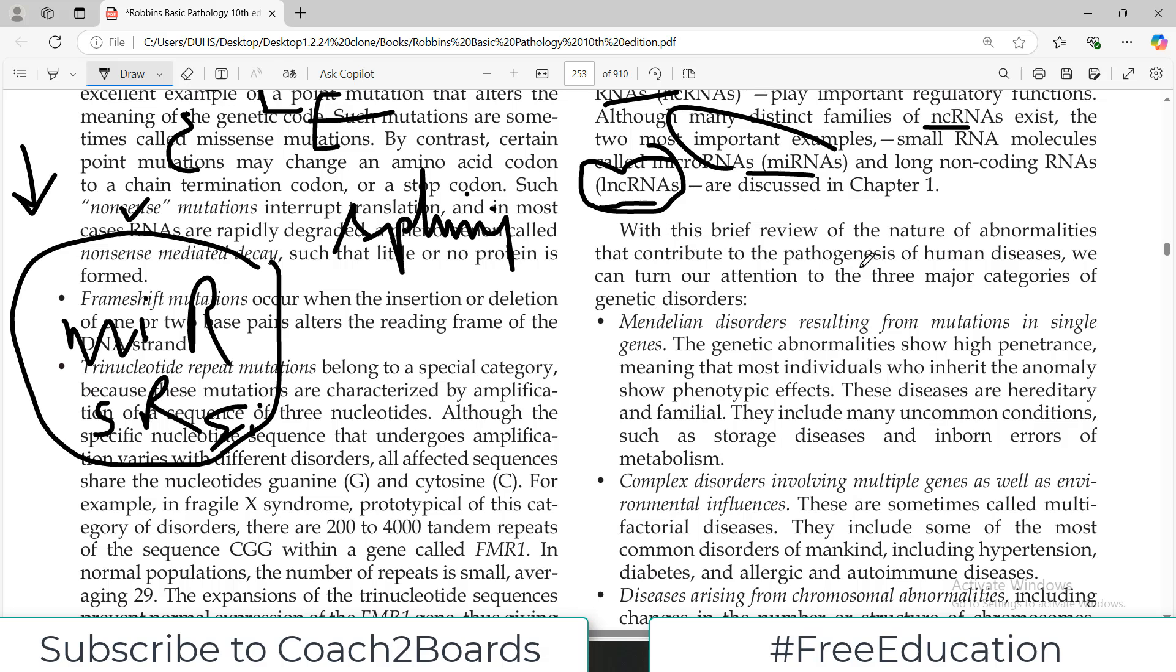With this brief review of the nature of the abnormalities that contribute to the pathogenesis of human disease, we can turn our attention to three major categories. The first one is what we call the Mendelian disorders.